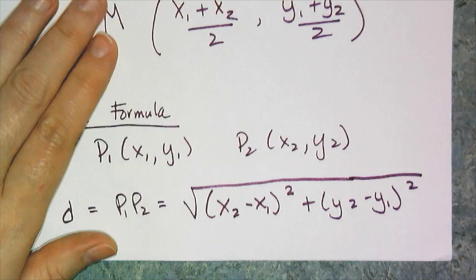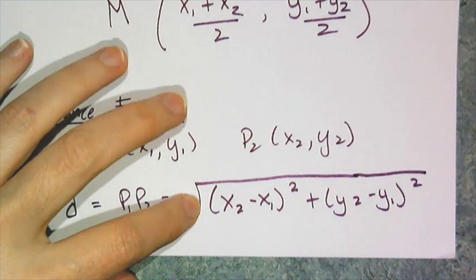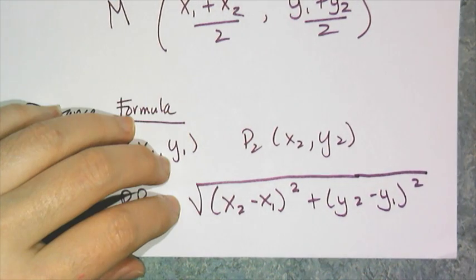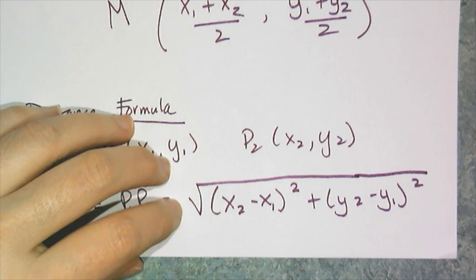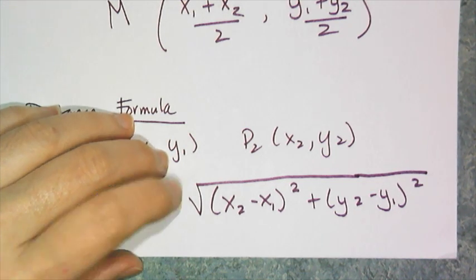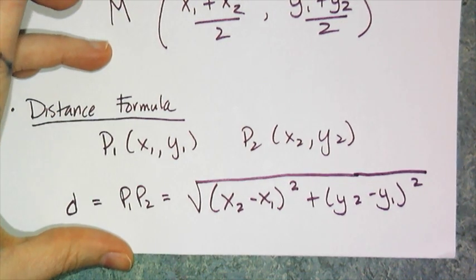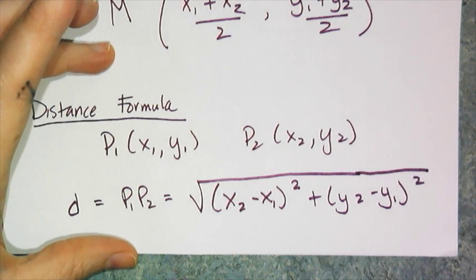And the reason we have to go over the distance formula is because we're about to go into the conics, which are the cross sections of a double cone and a plane, and their definitions are all reliant on the distance formula.